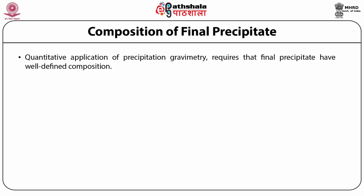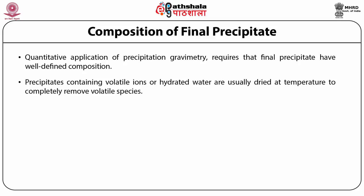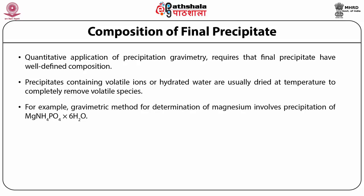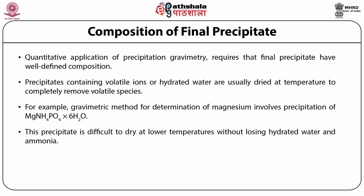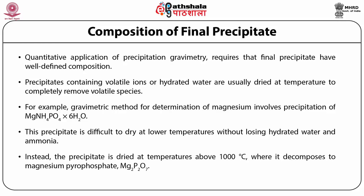The quantitative application of precipitation gravimetry requires that the final precipitate have a well-defined composition. Precipitates containing volatile ions or substantial amounts of hydrated water are dried at temperatures sufficient to completely remove volatile species. For example, one standard gravimetric method for the determination of magnesium involves precipitation as magnesium ammonium phosphate hexahydrate. This precipitate is difficult to dry at lower temperatures, so instead it is dried above 1000 degrees centigrade where it decomposes to magnesium pyrophosphate.